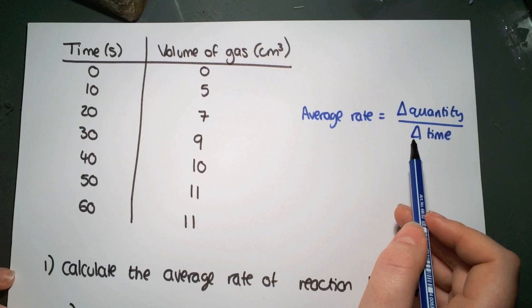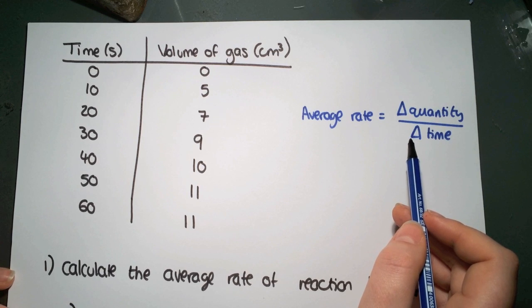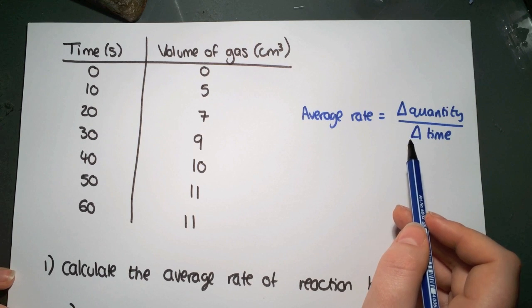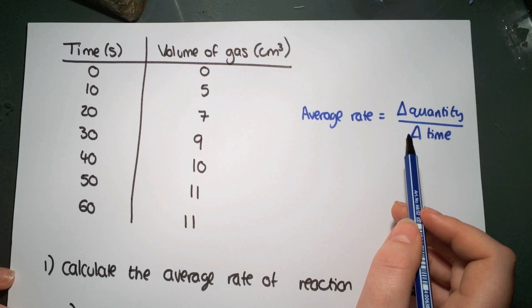Delta time is change in time, so the time could be measured in seconds, minutes, hours, milliseconds. You use whatever units you've been given.